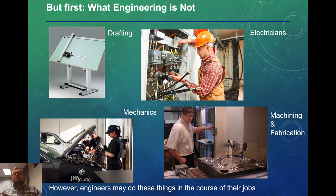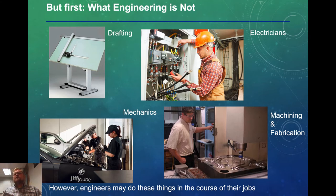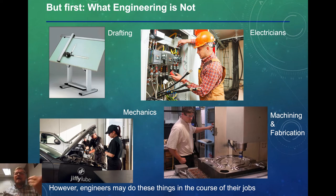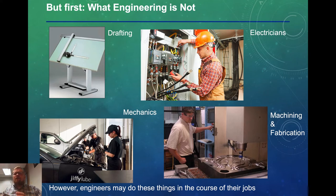Before we launch into more about specific types of engineering, the first thing I want to point out is what engineering is not. Engineering may contain some of these skills, but this is not the whole of engineering. Engineering is not just drafting — an engineer may use drafting as part of solving problems and may use computer-aided design tools, but the finished product is not a draft or drawing. Engineers are not electricians. Electricians are skilled laborers who go through an apprenticeship program to learn how to specifically deal with higher power wiring. There's certainly some wiring in electrical engineering, but that is not the end goal.